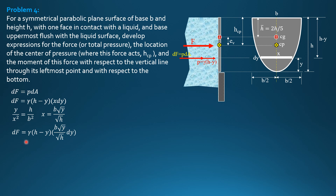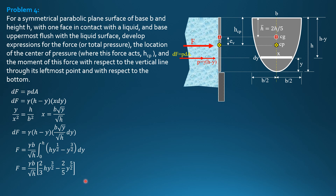Integrating, F equals gamma b over square root of h times the integral from 0 to h of (h times y to the one-half minus y to the three-halves) dY. Evaluating: F equals gamma b over square root of h times [two-thirds h times y to the three-halves minus two-fifths y to the five-halves] from 0 to h. This simplifies to 4 over 15 times h to the five-halves divided by square root of h. Therefore, F equals 4 gamma b h squared over 15.